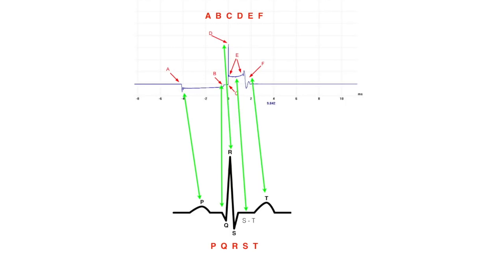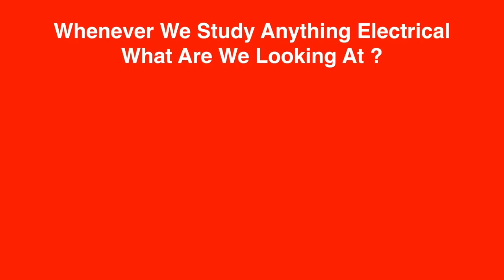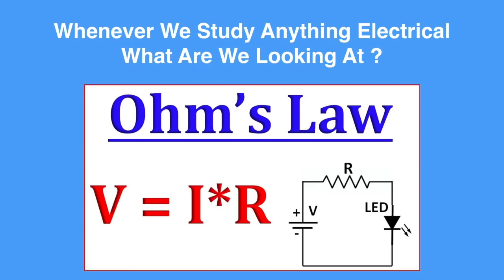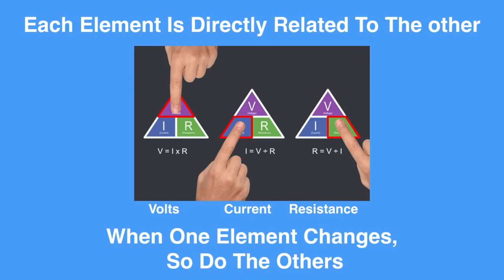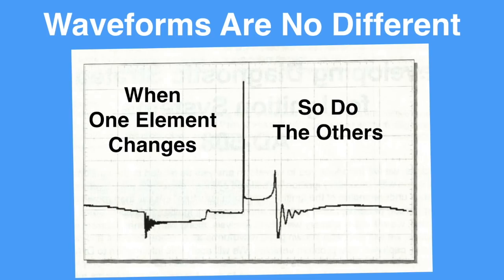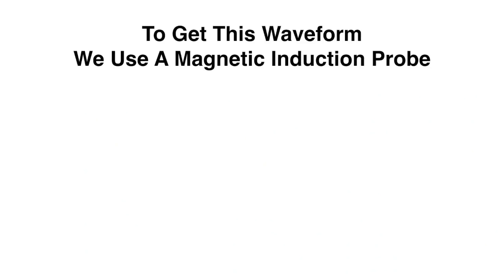In secondary waveform analysis, whenever we're studying anything electrical, what are we looking at? We're looking at Ohm's law in action. In Ohm's law, each element is directly related to the other. As one changes, so will the others — volts, current, and resistance. Waveforms are no different. When one element changes, so do the others.